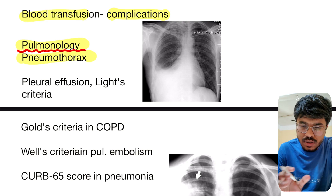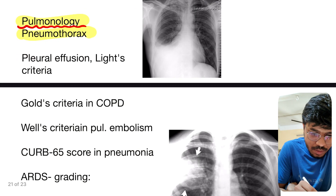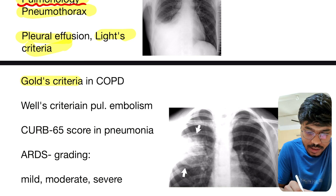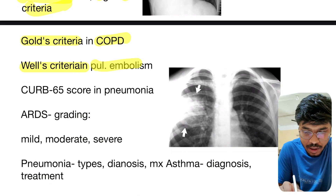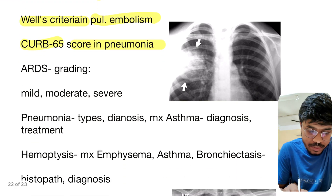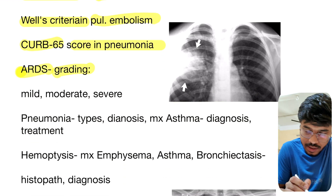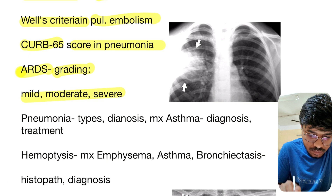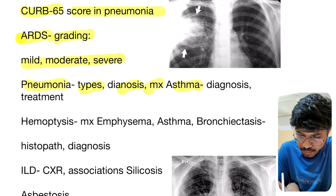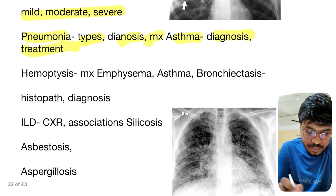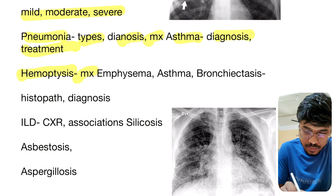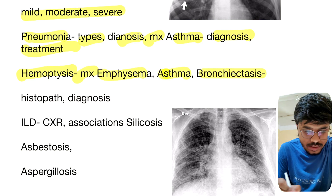From pulmonology: pneumothorax, tension pneumothorax, open pneumothorax — especially tension pneumothorax management, diagnosis, and X-ray are all important. Pleural effusion — Light's criteria, exudate criteria. In COPD — oat criteria. In pulmonary embolism — PESI score. CURB-65 score in pneumonia — again important. ARDS: mild, moderate, severe. Pneumonia types, diagnosis, management.